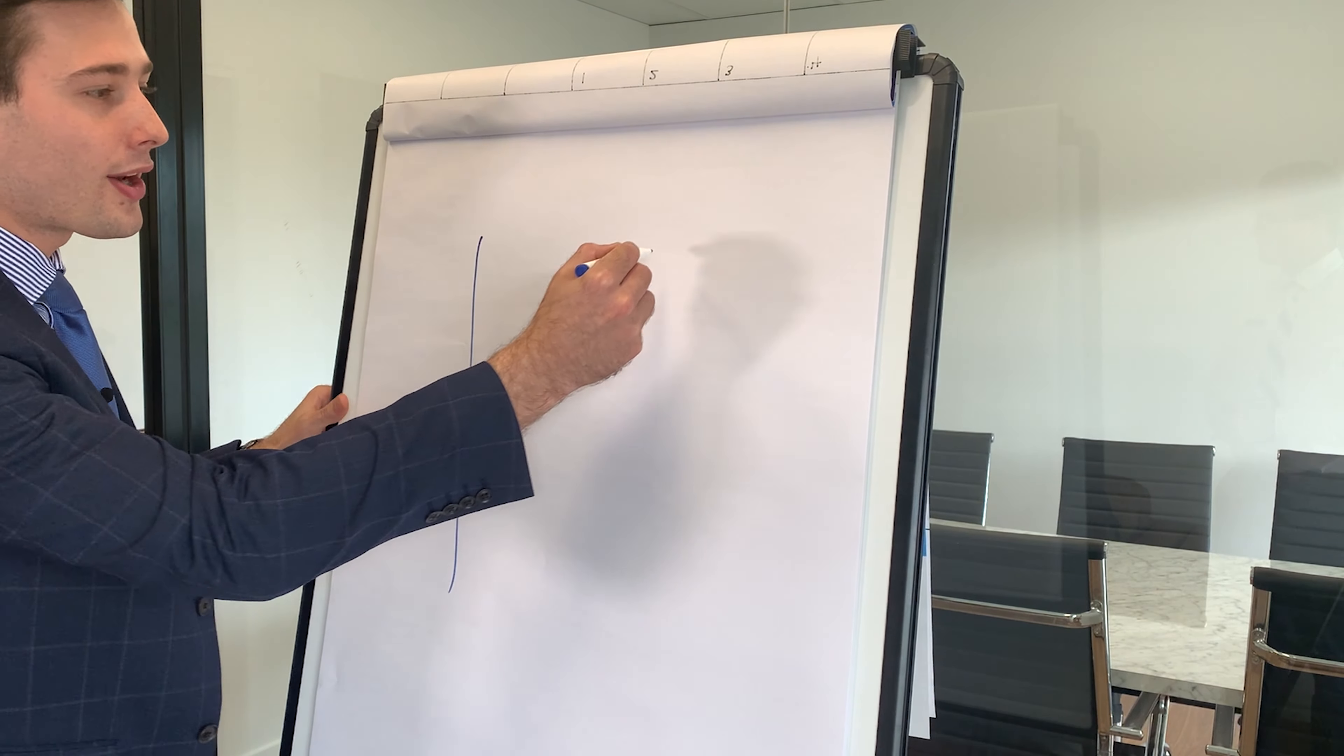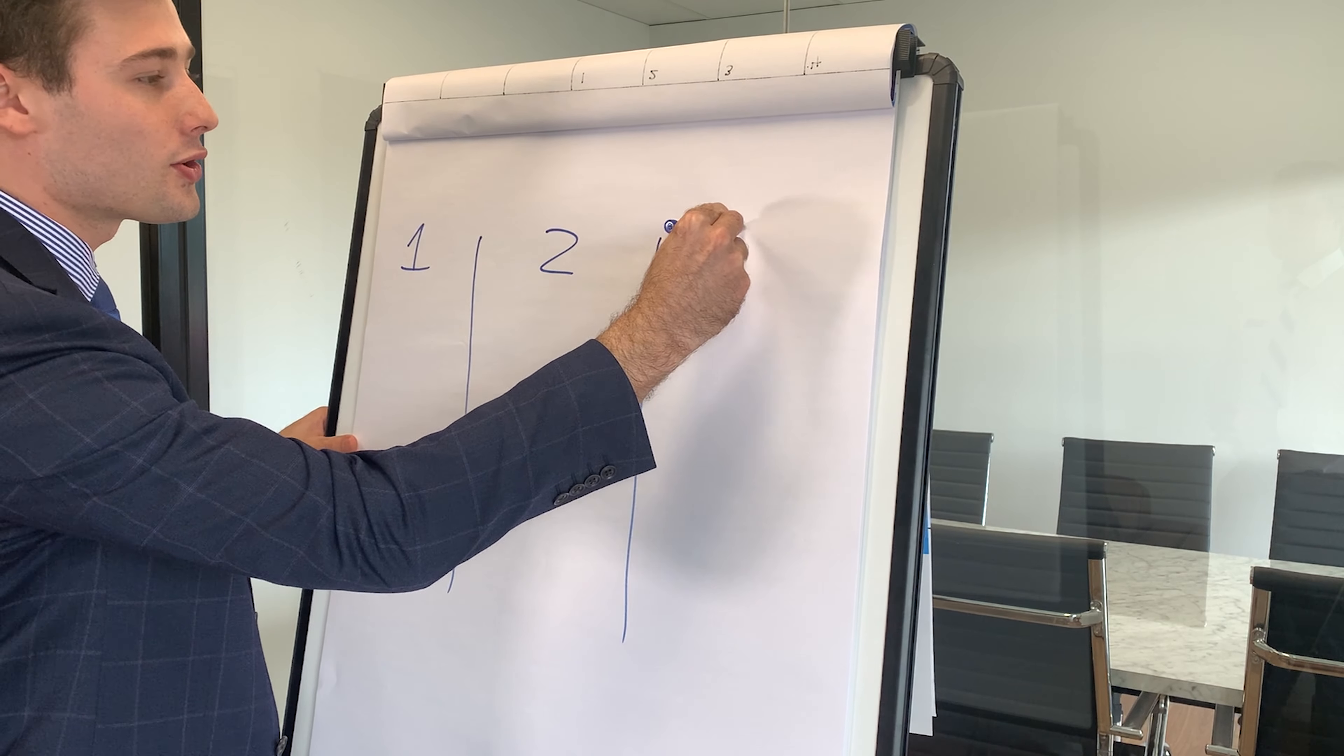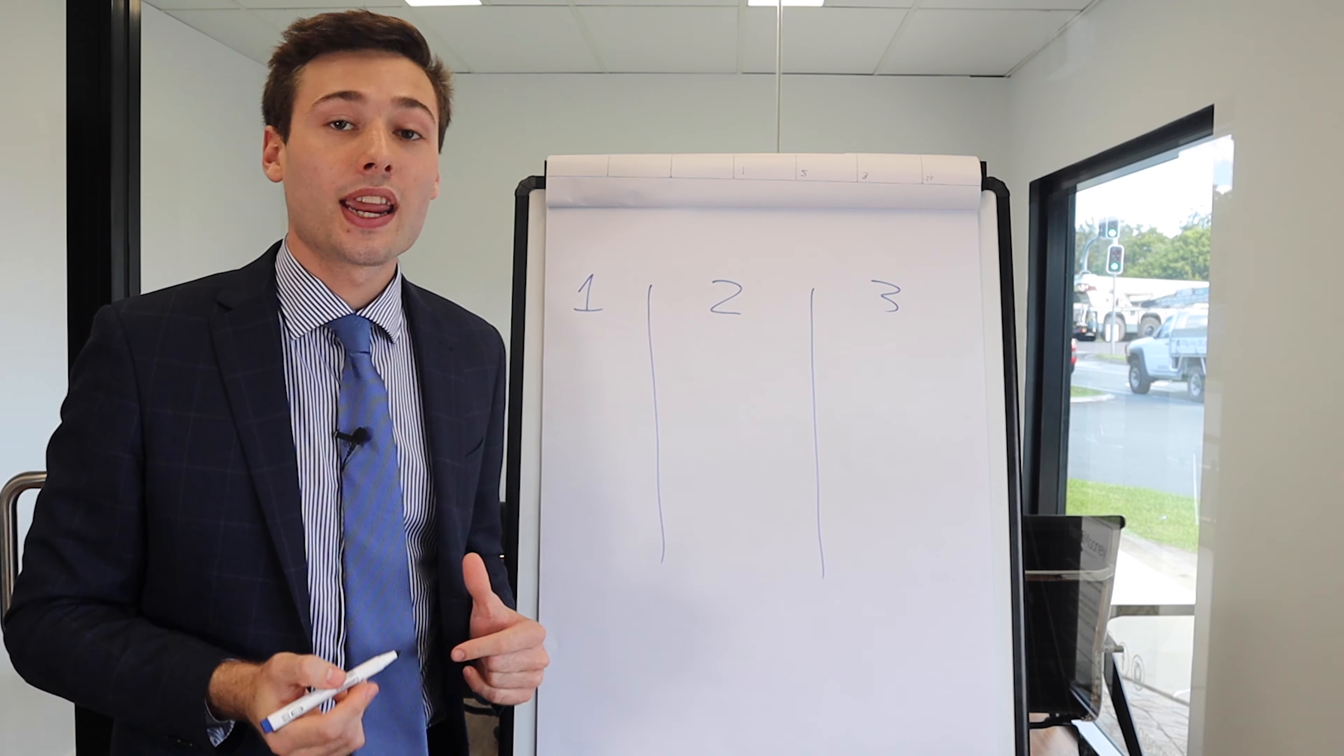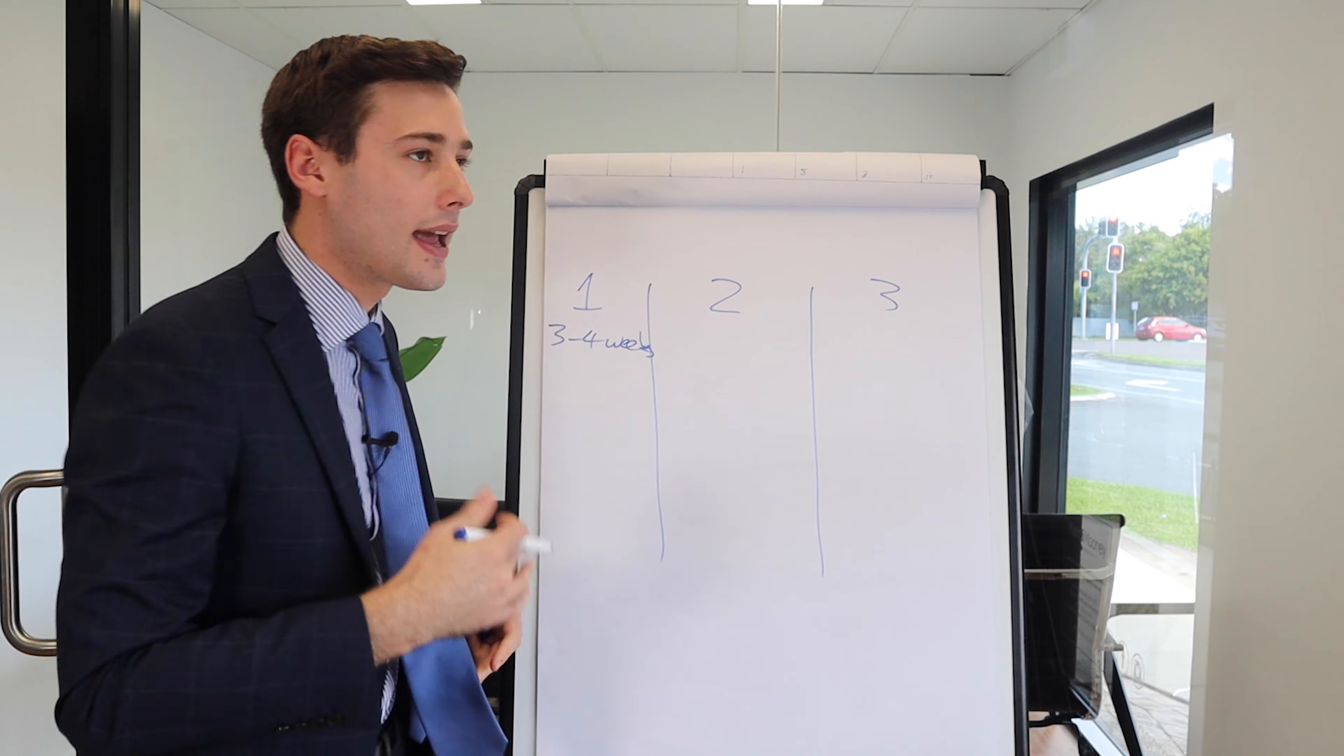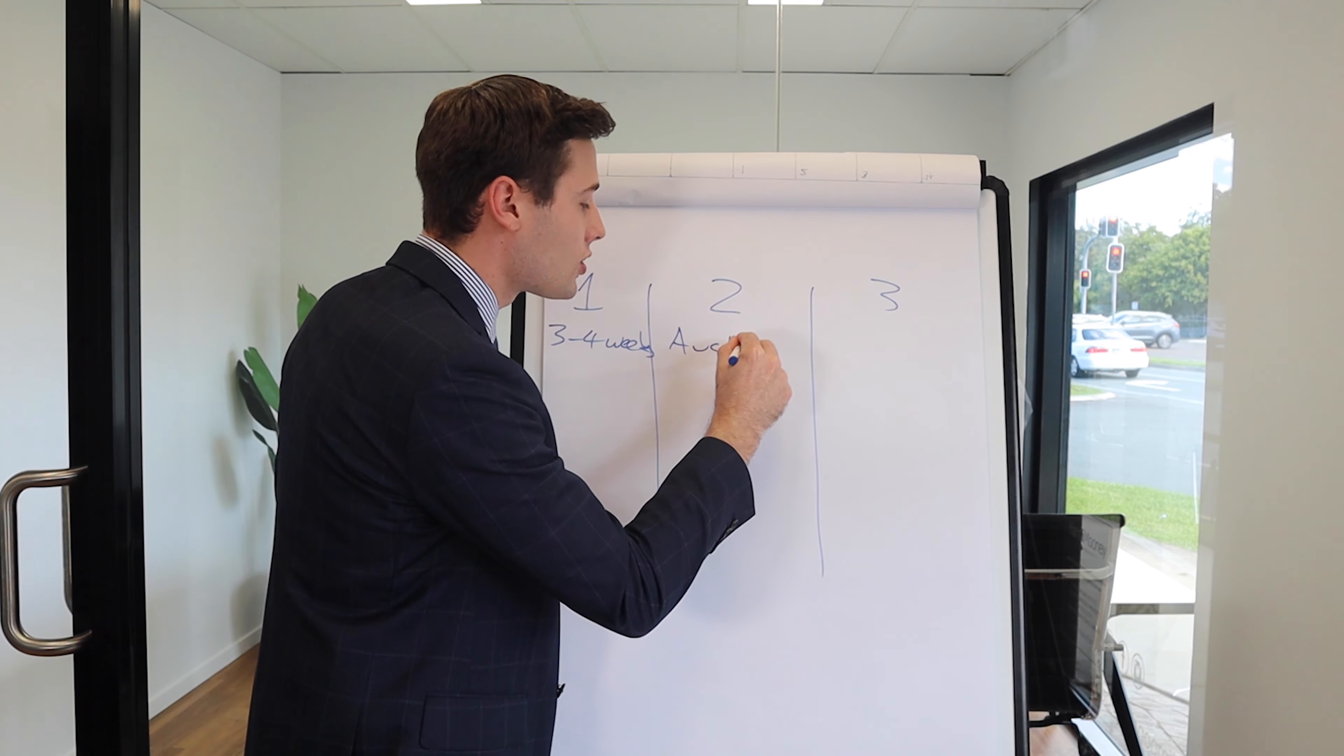The best way to describe an auction campaign is in three stages: stage one, stage two, and stage three. Stage one is generally three to four weeks of marketing, open homes, meeting buyers, and getting them ready for the auction itself. Generally three to four weeks to get the marketing sorted, get the feedback, and get buyers ready for the auction day, which leads me into stage two.